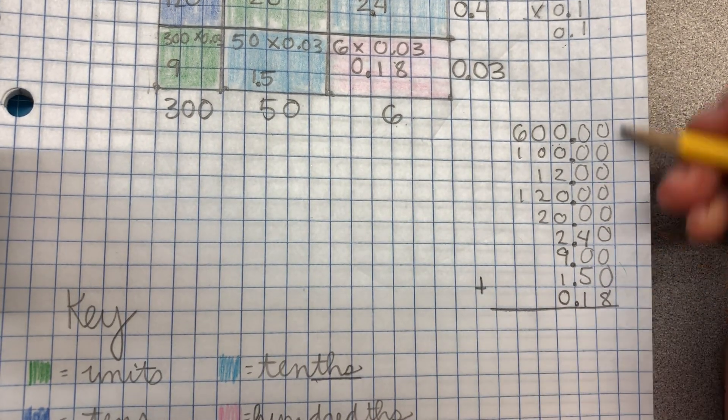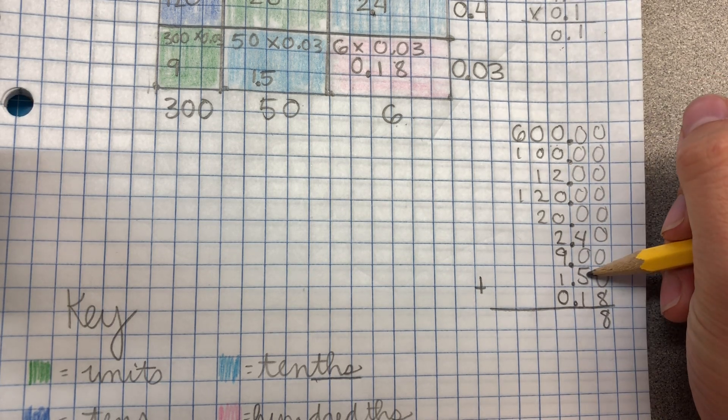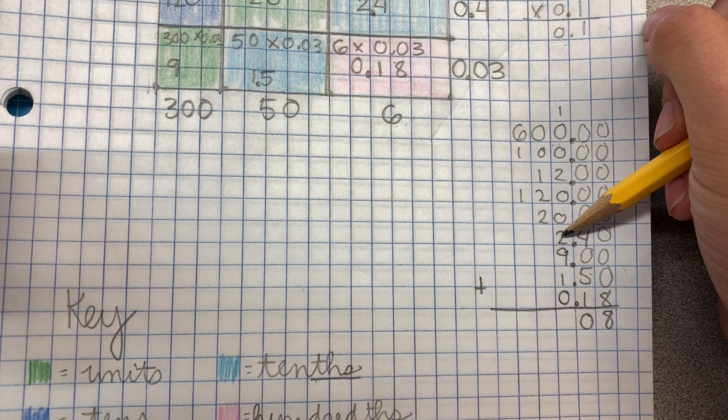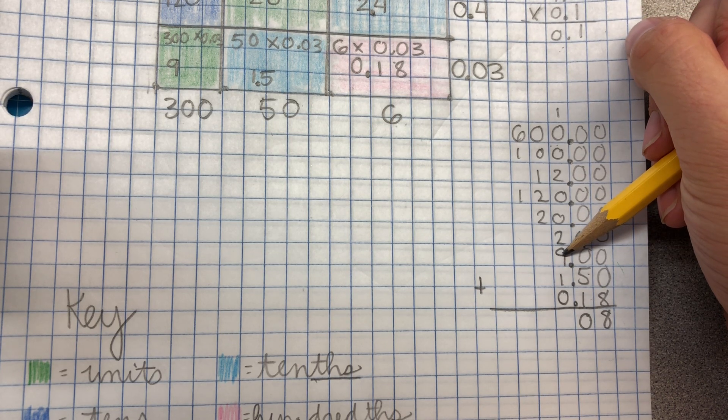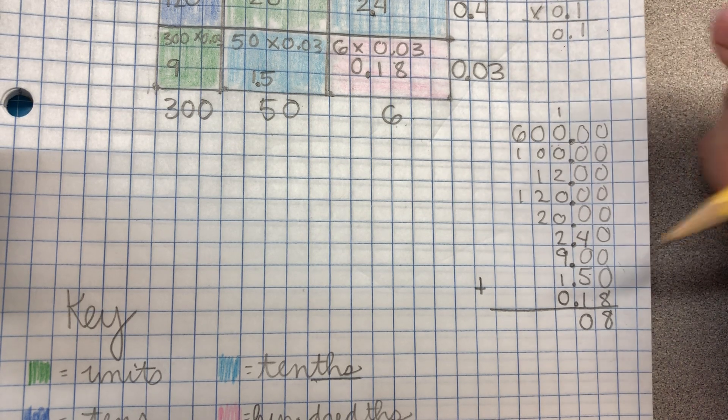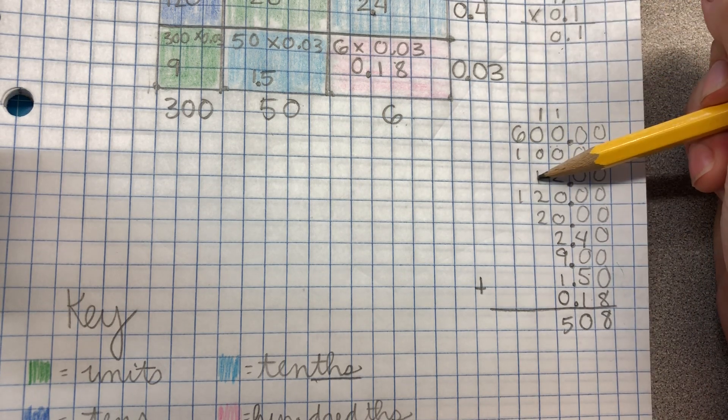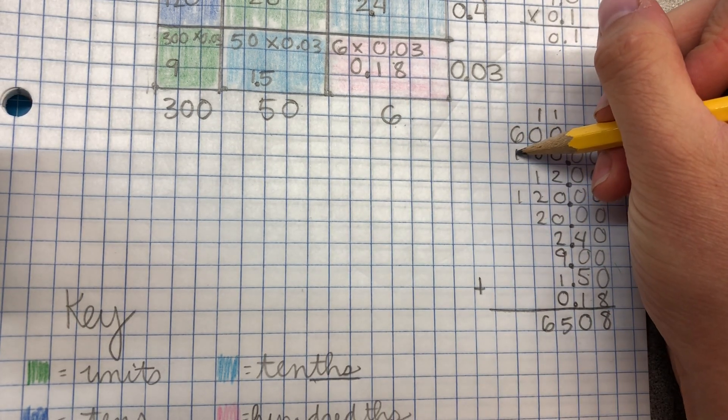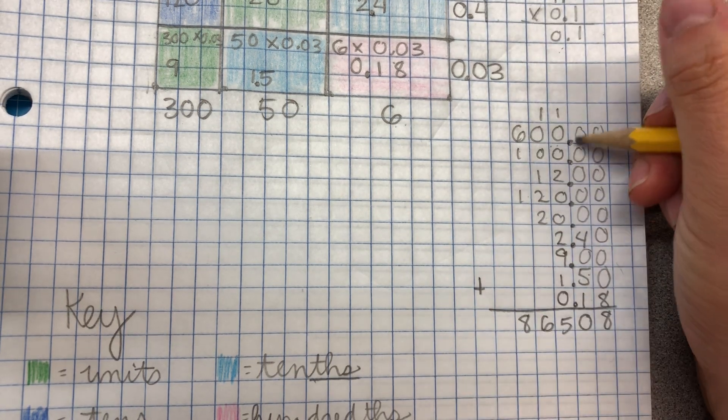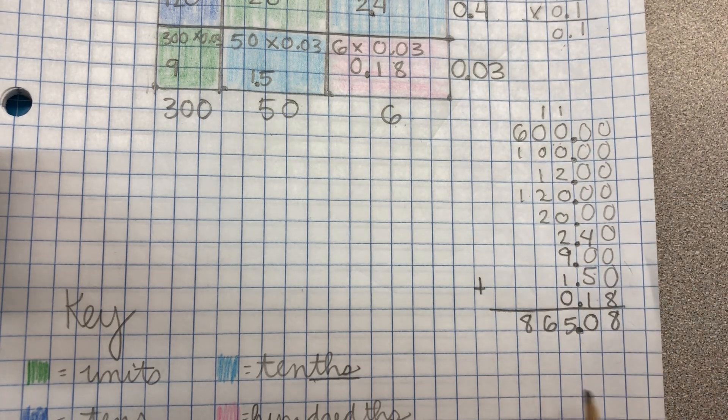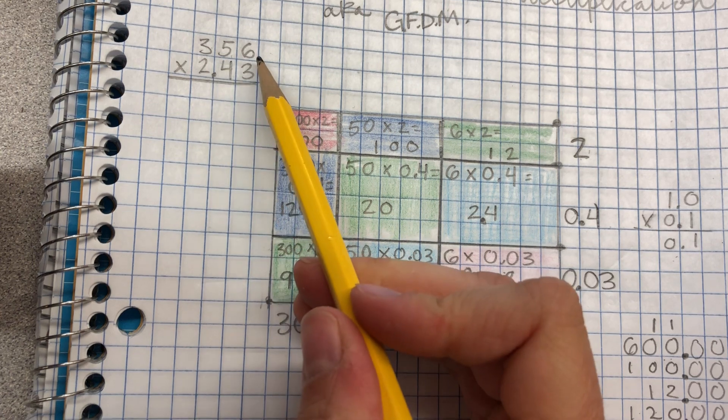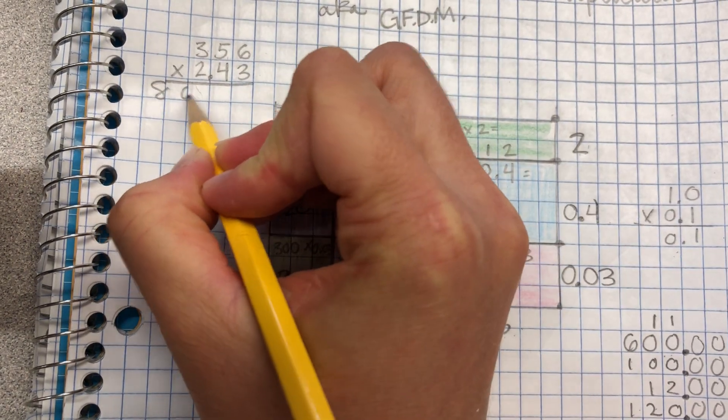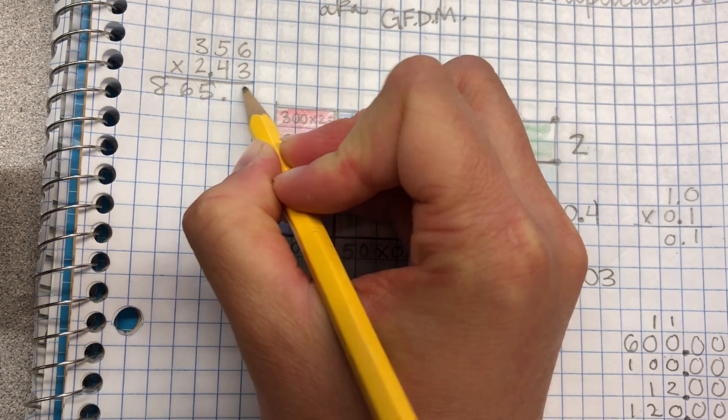I'm going to add that up. All that plus 8 is 8. 4 plus 5 is 9. Plus 1 is 10. So I'm going to write the zero. Carry the 1. 1 plus 2 is 3. Plus 2 is 5. Plus 9 is 14. Plus 1 is 15. So I'm going to write the 5. Carry the 1. 1 plus 1 is 2. Plus 2 is 4. Plus another 2 is 6. And 6 plus 1 is 7. Plus 1 is 8. And I'm going to carry my decimal point down. So we find that when we multiply 356 times 2 and 43 hundredths, our answer is 865 and 8 hundredths.